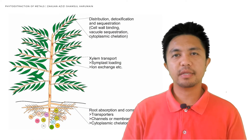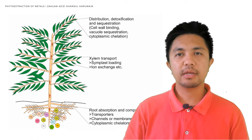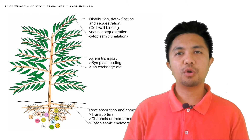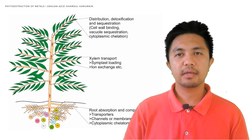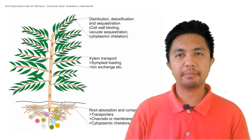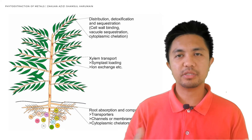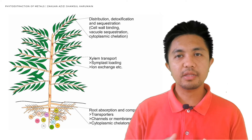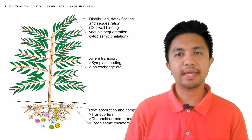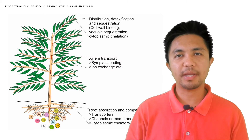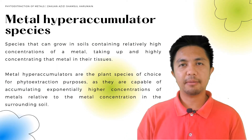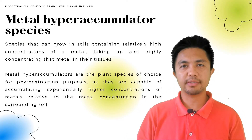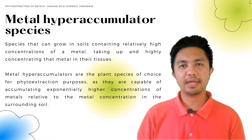The phytoextraction process involves the uptake of metals through absorption into the root, followed by xylem transportation into the aerial tissues. Metals can then be sequestered and stored in the cell wall or in the vacuole, or they can also be reduced by cytoplasmic chelation.